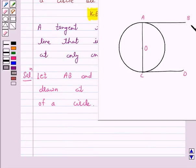Therefore, AB is perpendicular to OA and CD is perpendicular to OC.